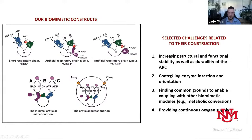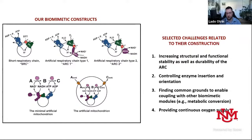The second challenge is that all these enzymes need to be inserted with correct orientation — orientation definitely matters. We need them to pump protons towards the inside of the vesicle, and then this gradient can be used by ATP synthase to produce ATP on the outside of the vesicles. Also, all copies of the enzyme need to be in the same vesicle at the same time to have a fully functioning artificial respiratory chain.